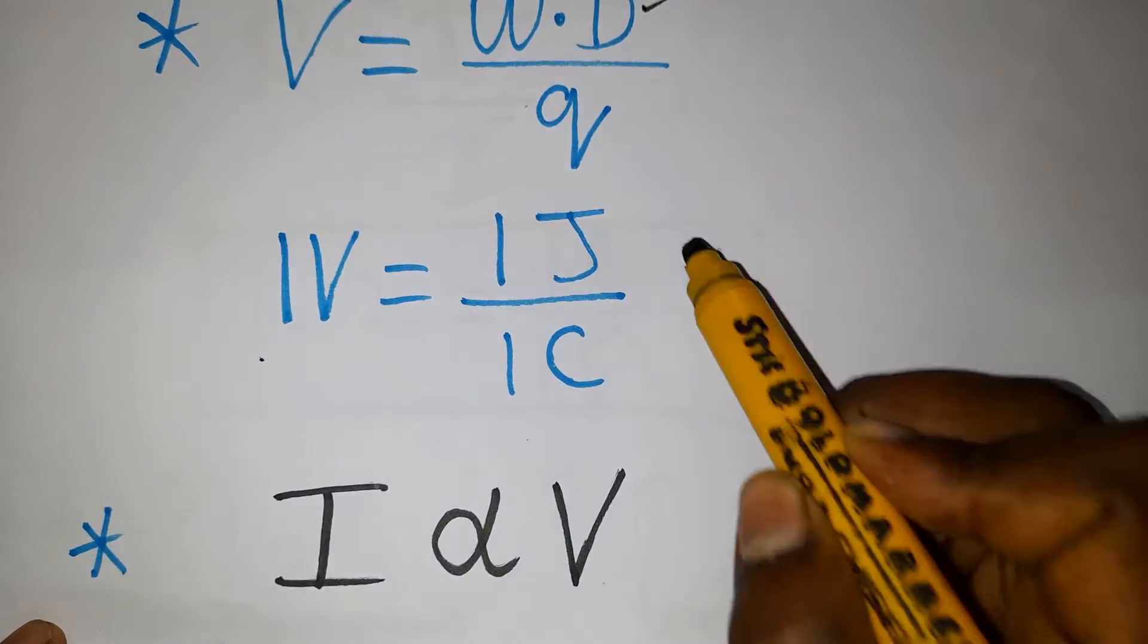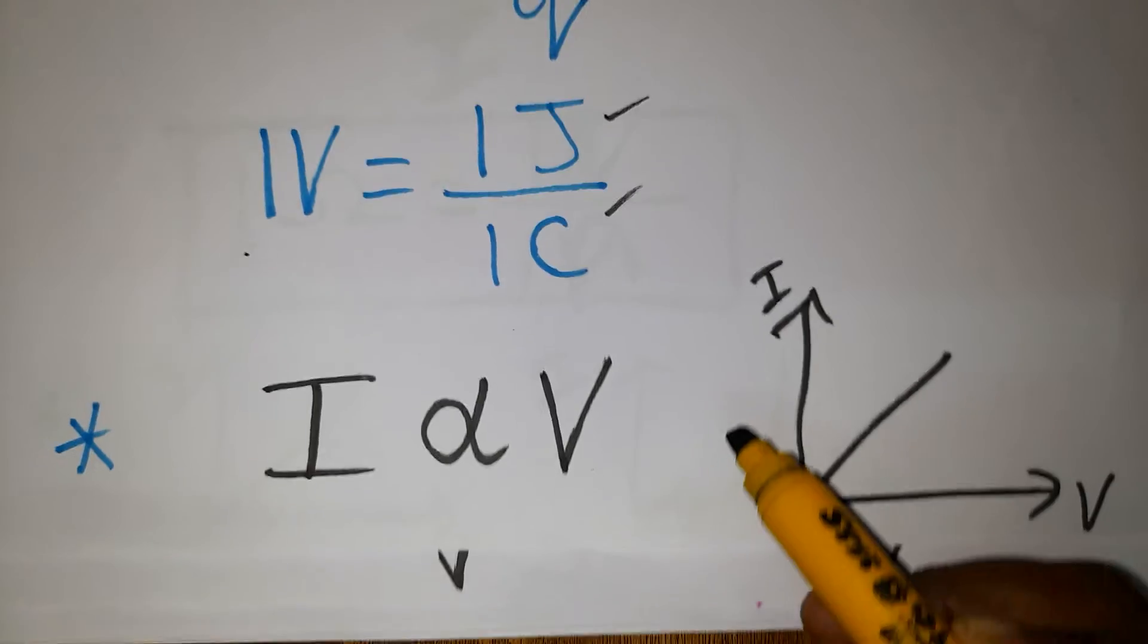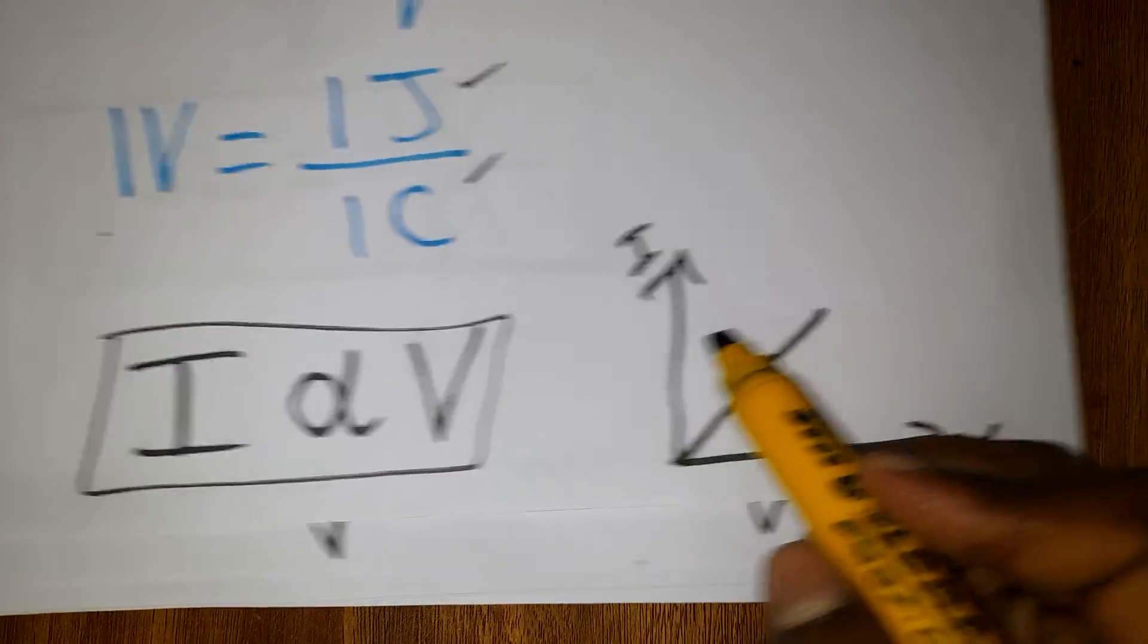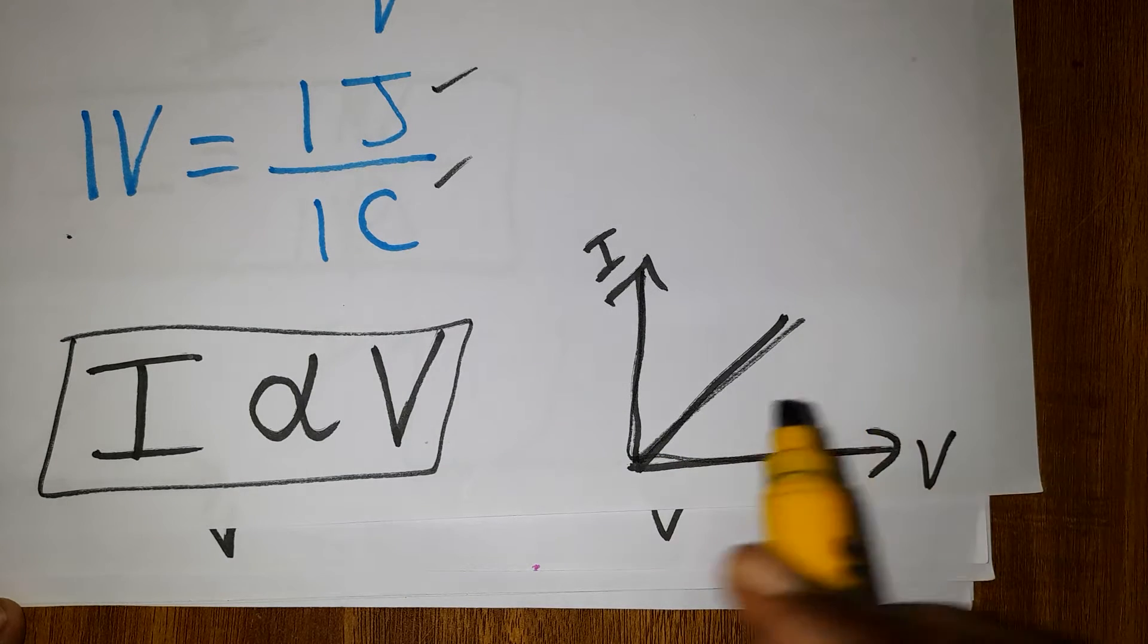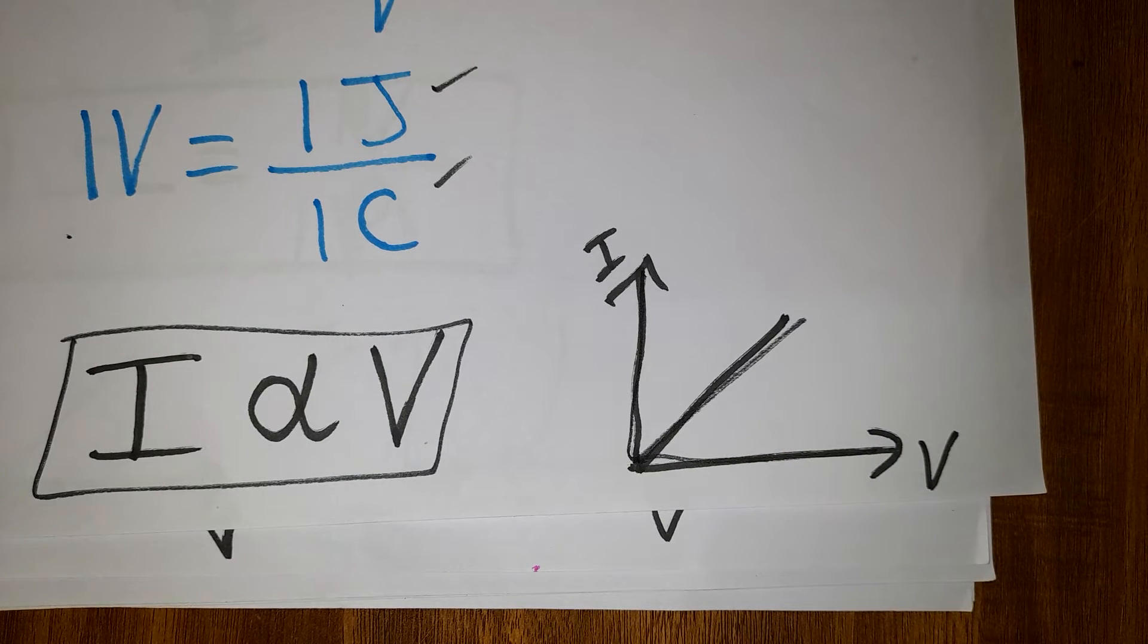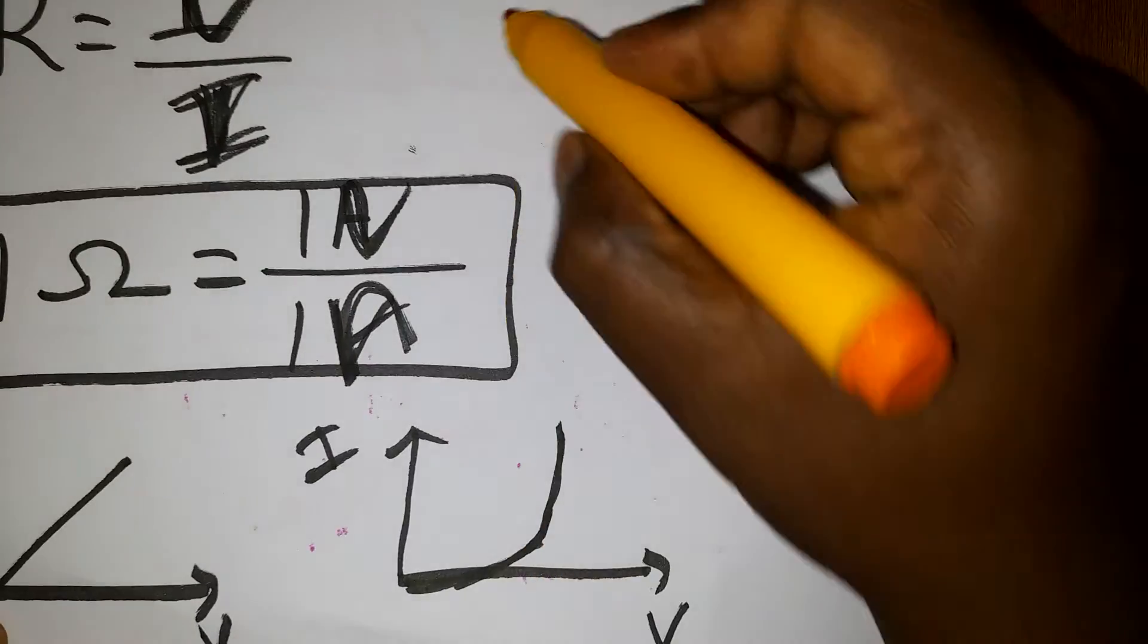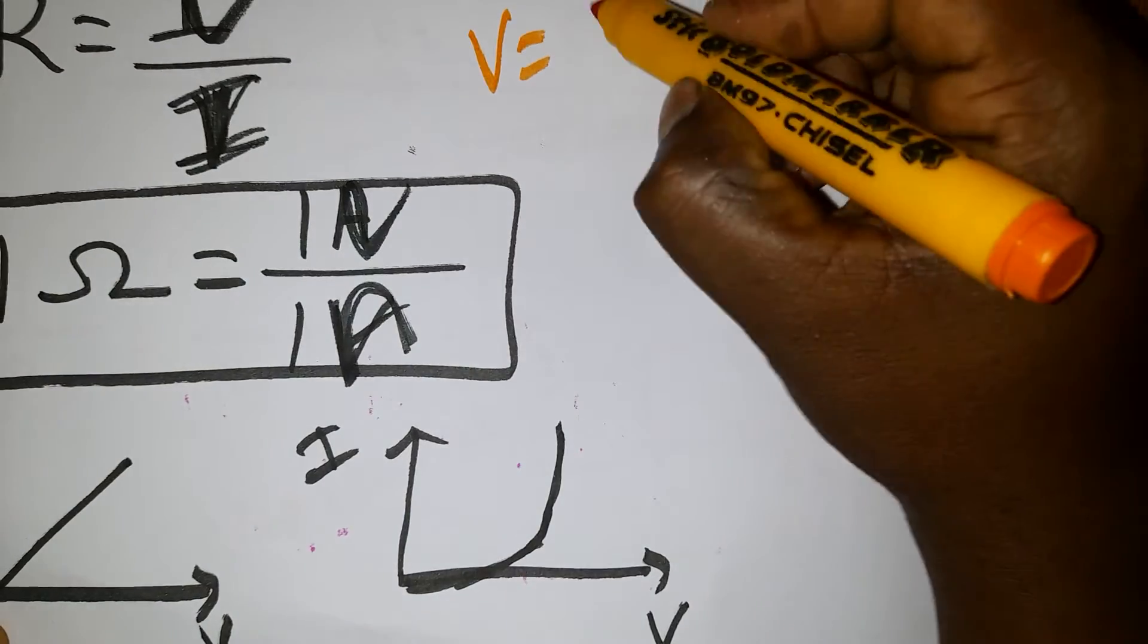According to Ohm's law, current is directly proportional to voltage. When we have direct proportionality, the graph will be a straight line. For the V versus I relation, we include resistance, so V = R × I.